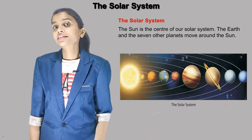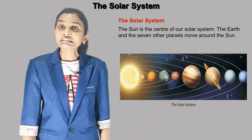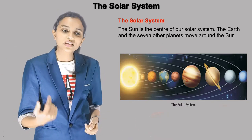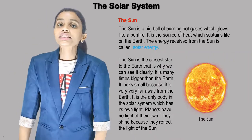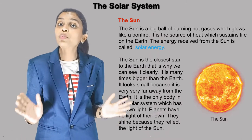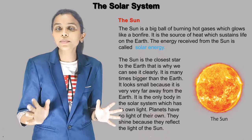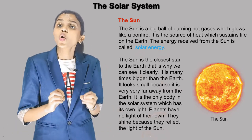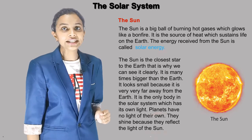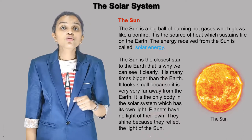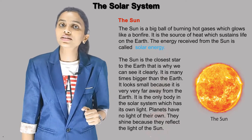The sun is the center of our solar system. The earth and the seven other planets move around the sun. The sun is a big ball of burning hot gases which glows like a bonfire. The energy from the sun is called solar energy.